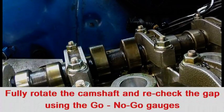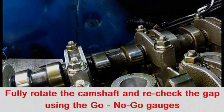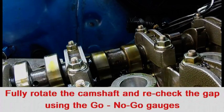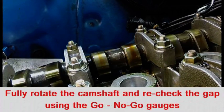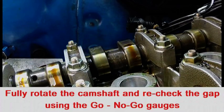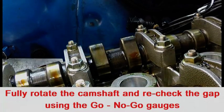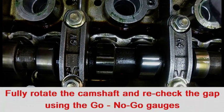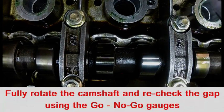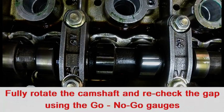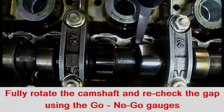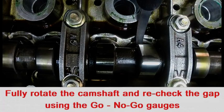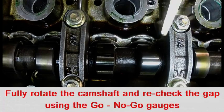Rotate the engine through 720 degrees so the crankshaft turns one full circle. Using the go no go gauges, doing the 0.33 no go first, this shouldn't go in, and it doesn't.